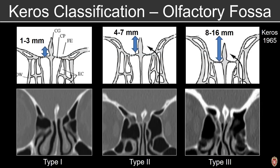The olfactory fossa can be measured from the horizontal lamella of the cribriform plate to the fovea ethmoidalis, and that's described based on the Keros classification. A relatively shallow olfactory fossa is a type one, a relatively deep olfactory fossa is a type three, and a type two is in between.